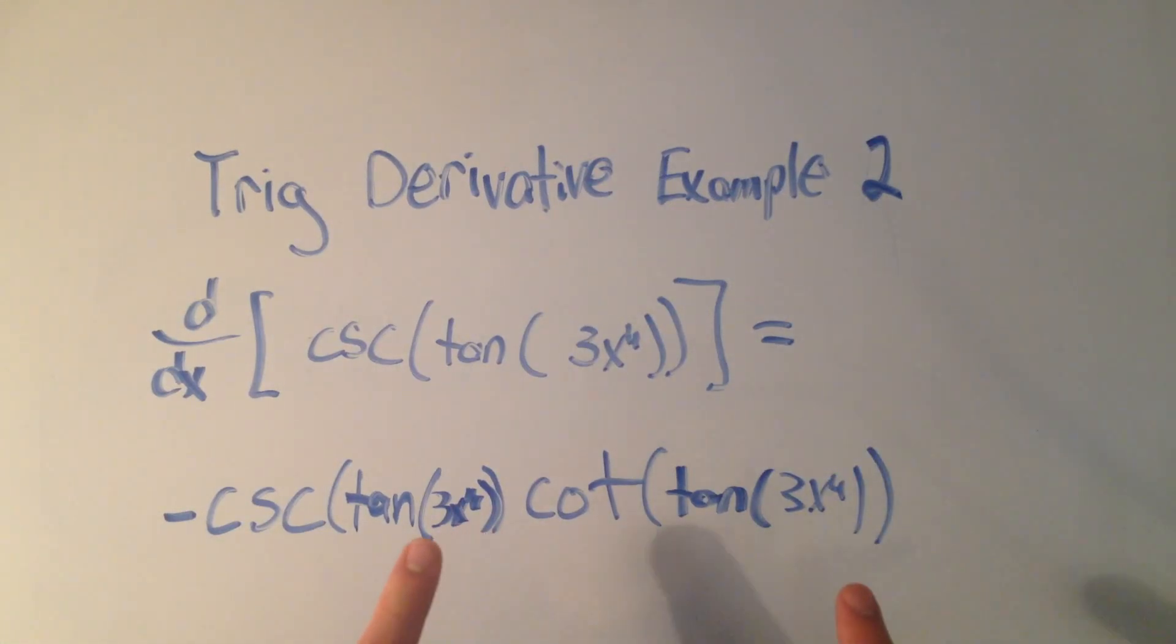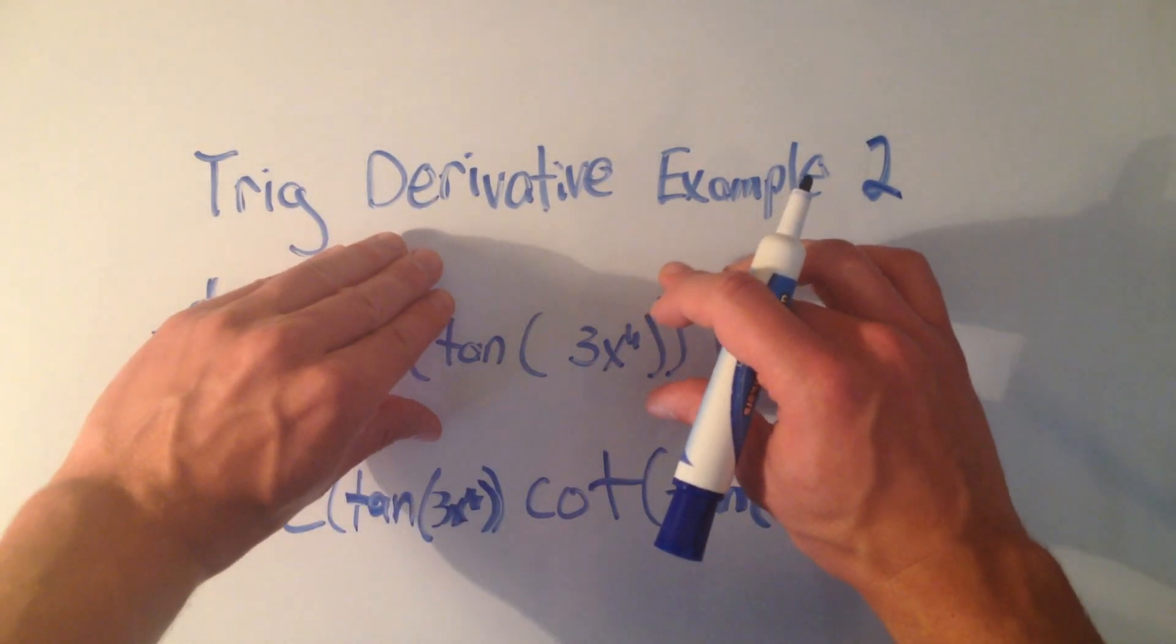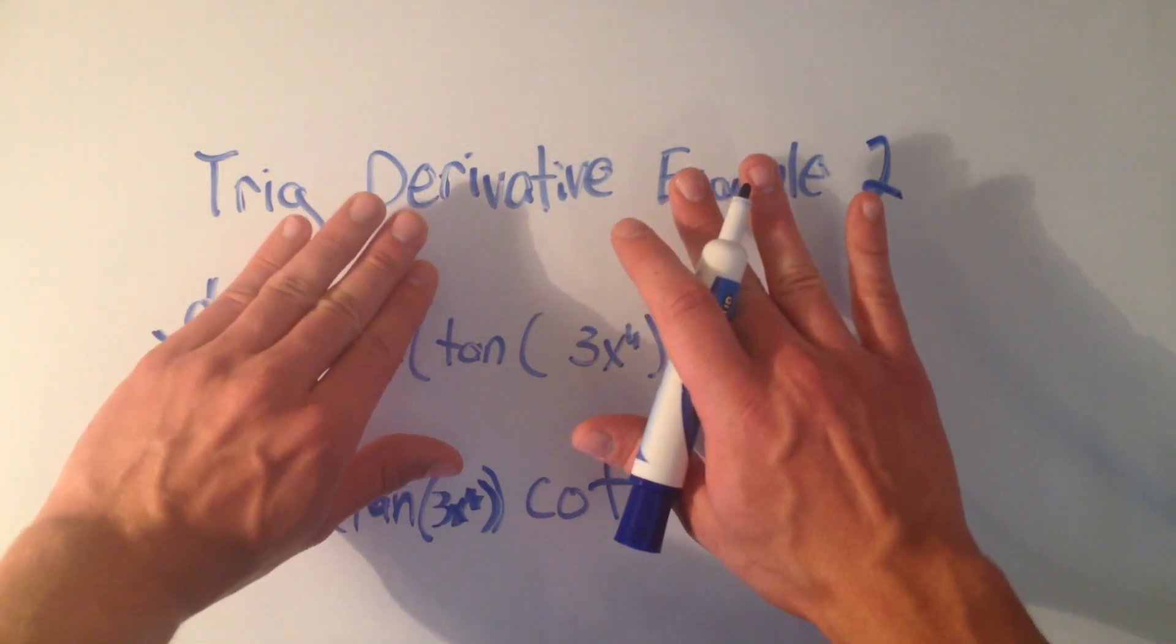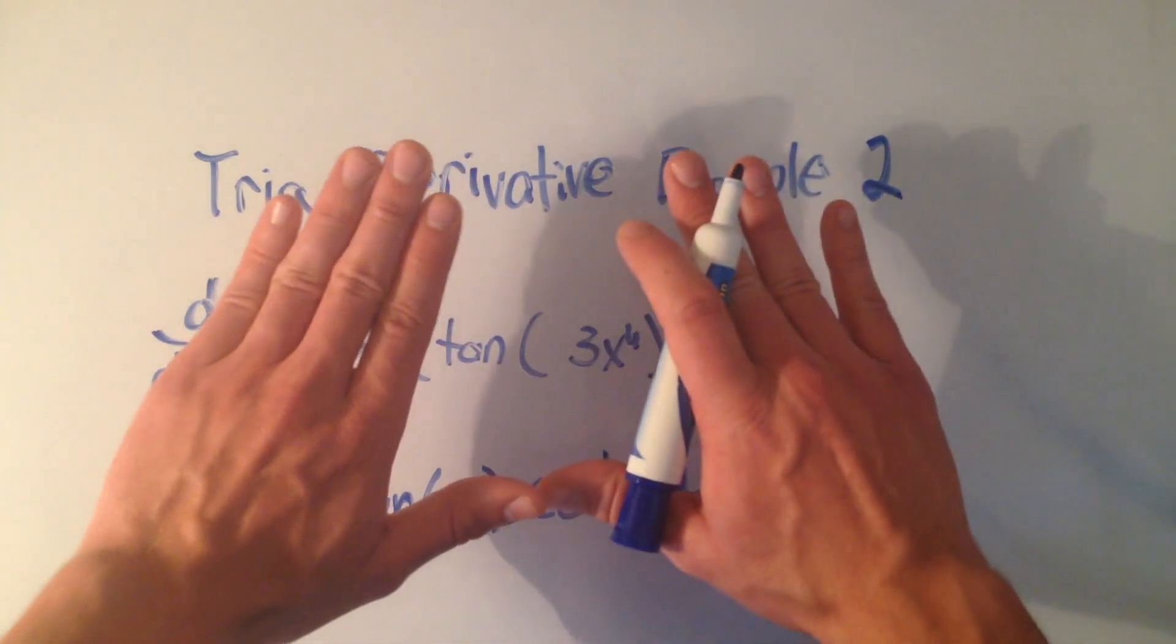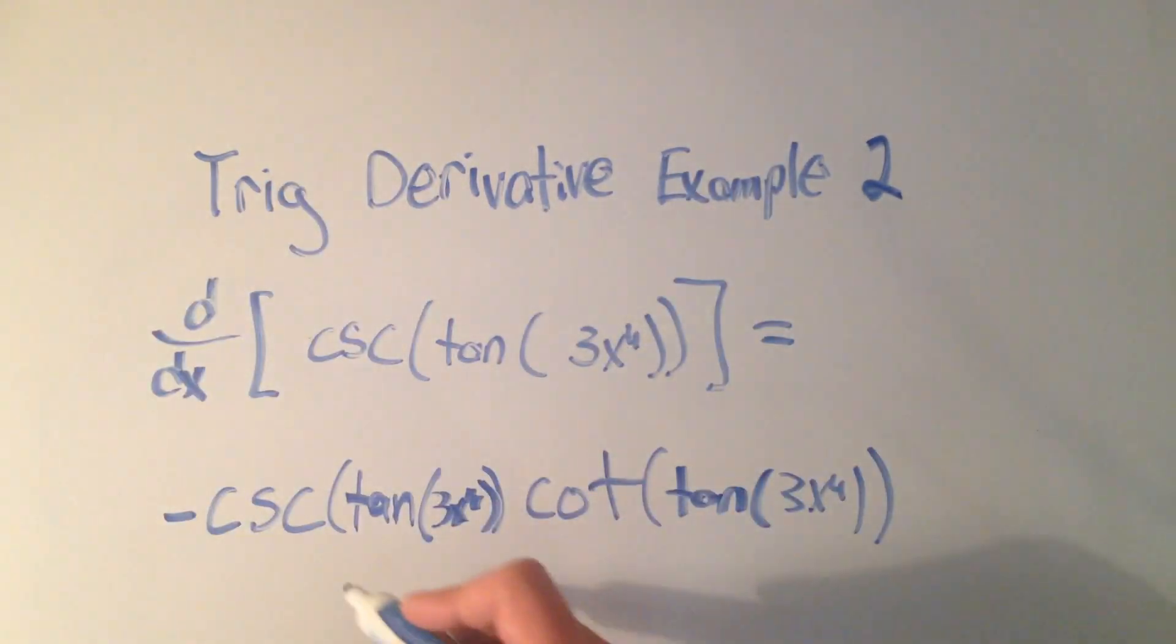But I have to multiply by the derivative of the next piece. So if I look at the next piece, the next piece is tangent of 3x to the fourth. The derivative of tangent is secant squared of whatever is on the inside.